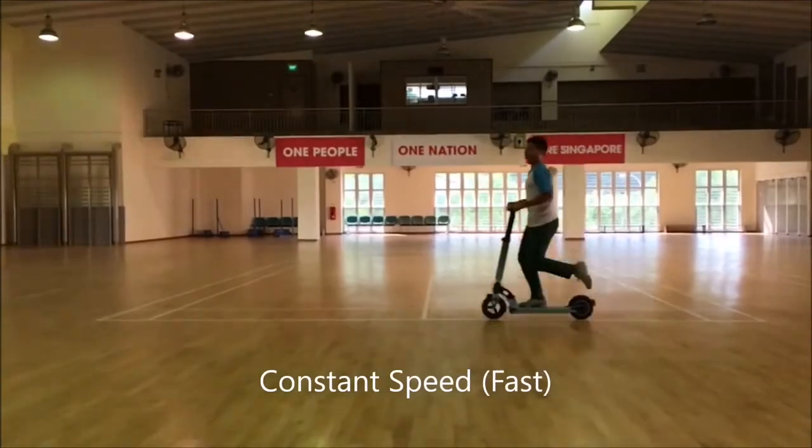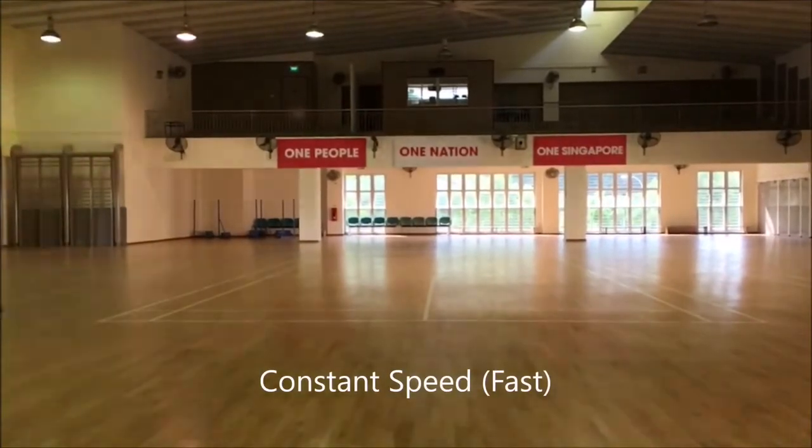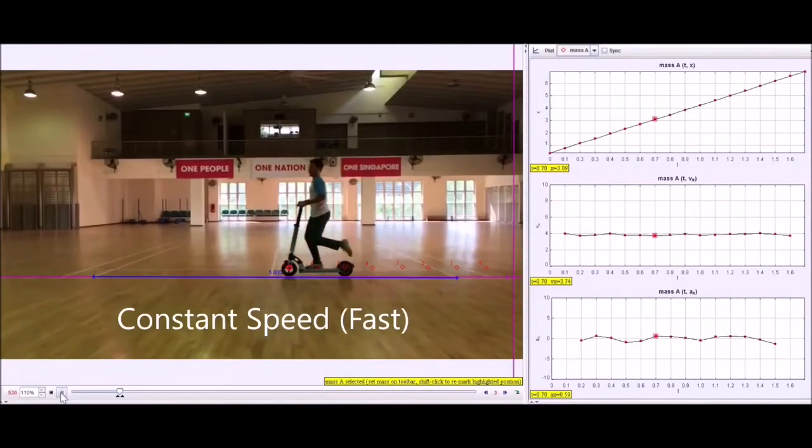Now, let's compare this to when Anik is moving at a faster constant speed. You can see that the graphs don't change very much.